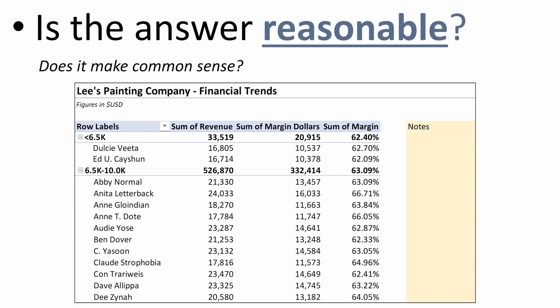Let's talk about our data file, as there are definitely some things in here that probably aren't reasonable and don't make common sense. Number one, look at the size of our franchisees. We pulled this together on our small franchisees, and many of them have less than $10,000 a year in revenue. That's obviously far too small for a small franchisee and doesn't make common sense. If you were doing this analysis and saw something like this, that's a red flag that you may need to check something or go through a different process to make sure your numbers are calculated correctly.